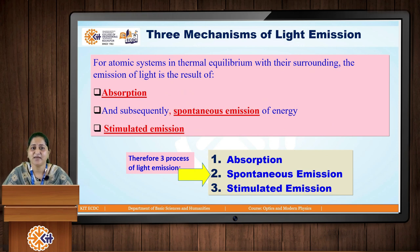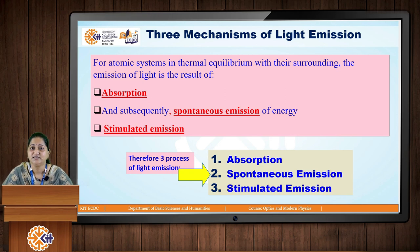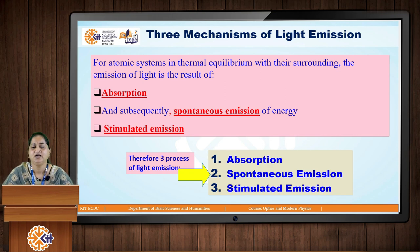There are three main processes required for laser production. The first process is absorption of light, the second is spontaneous emission of energy in the form of radiation, and the third is stimulated emission, which is involved in the acronym of laser. Let us see what absorption, spontaneous emission, and stimulated emission stand for.